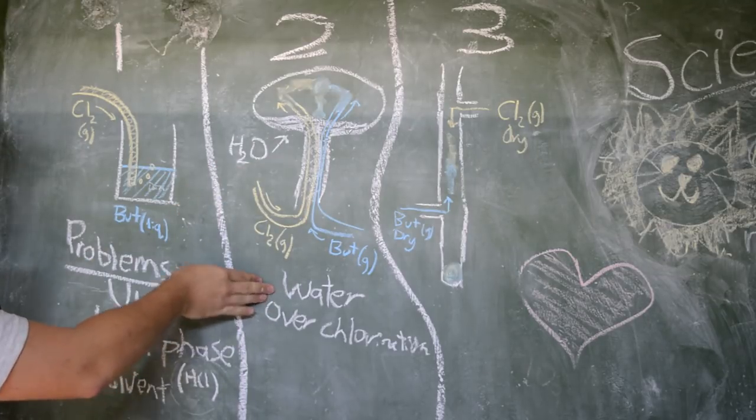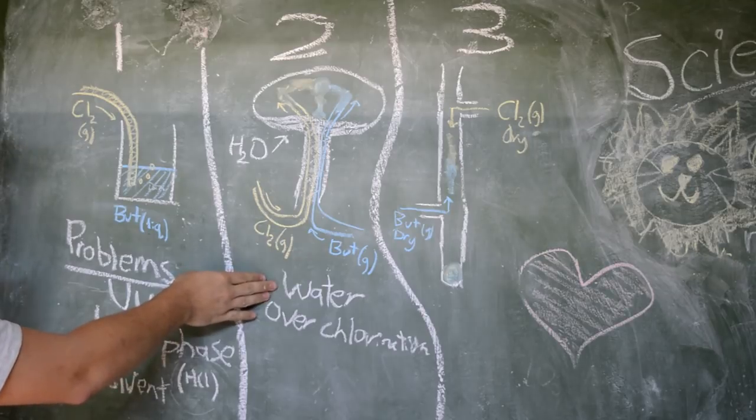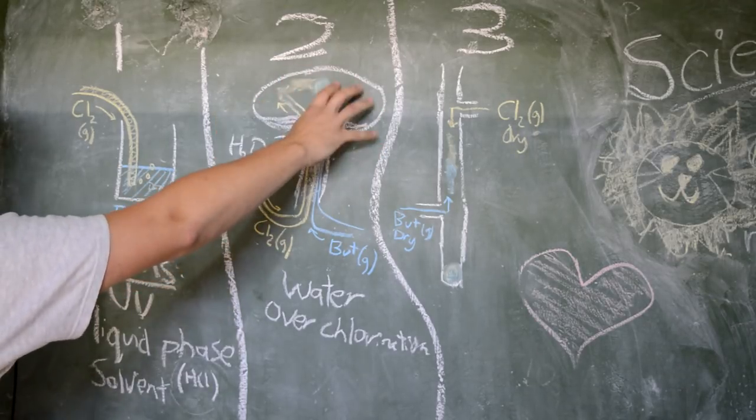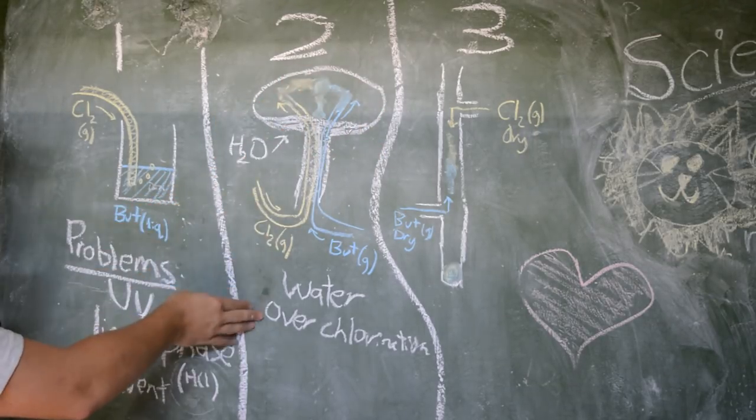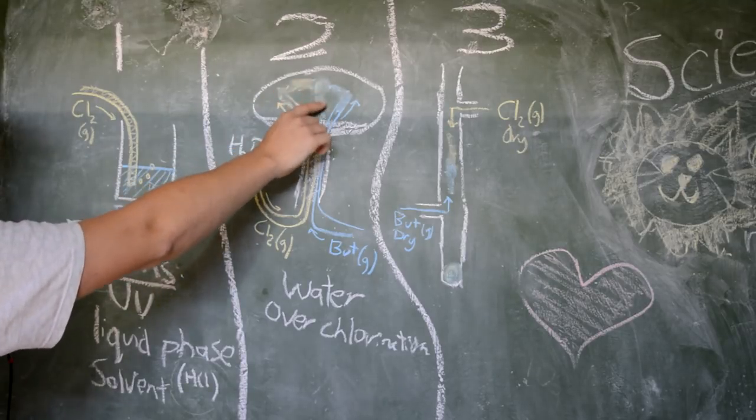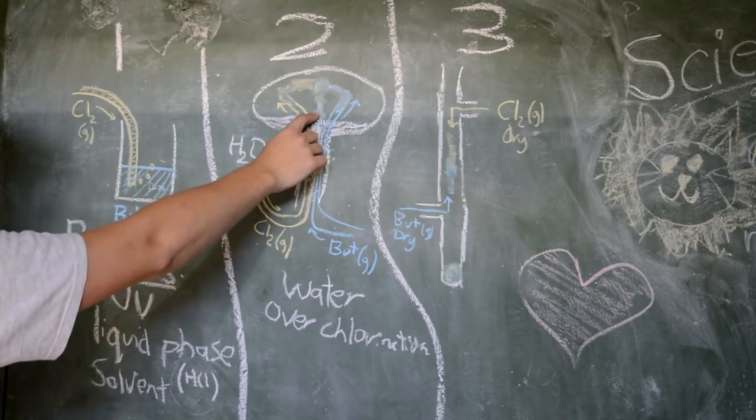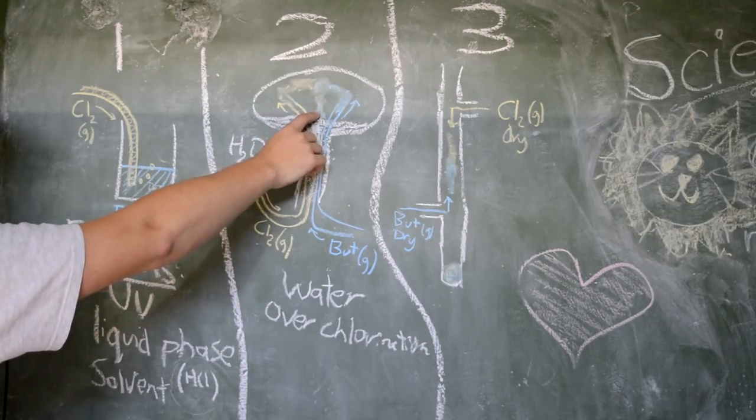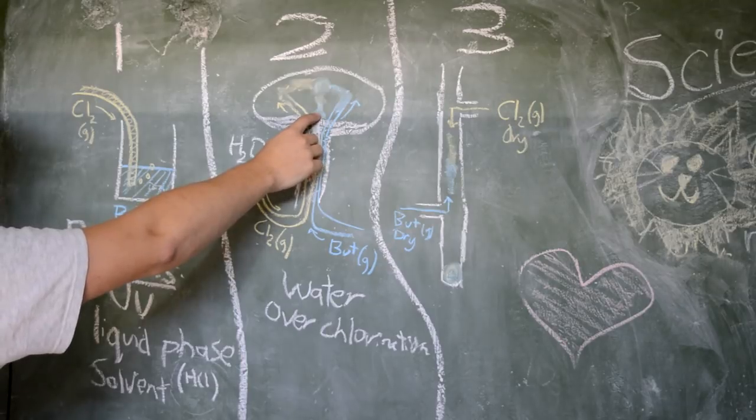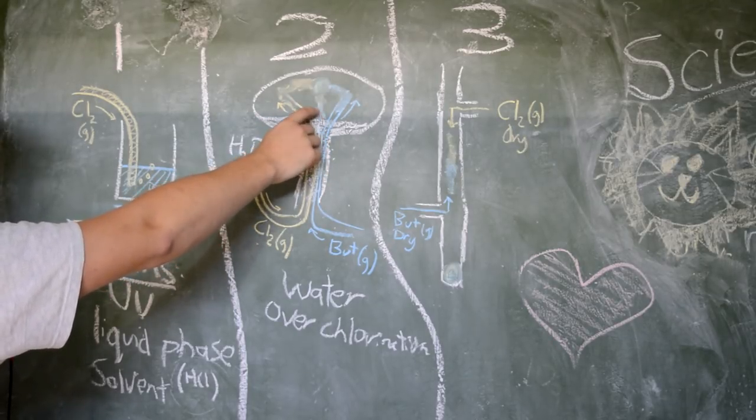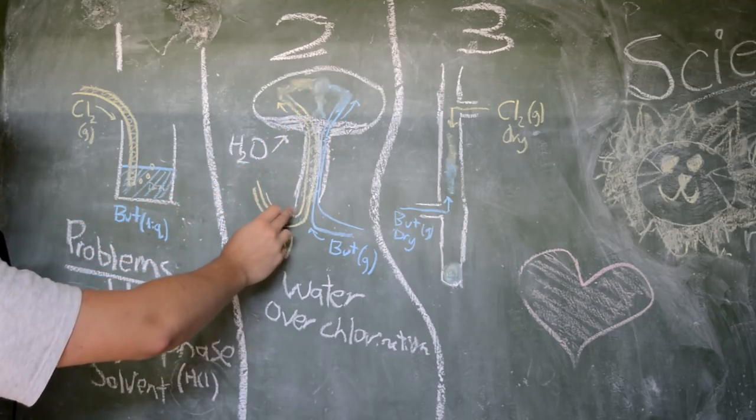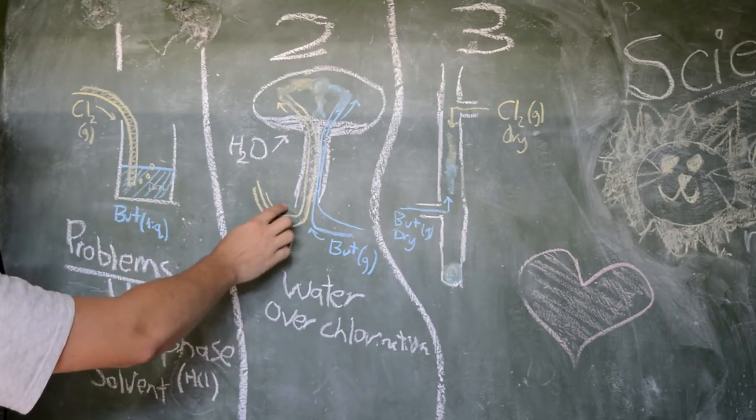The main one, of course, and pretty much everyone sort of thought this was going to be quite an issue was that there was a lot of water in this setup. So this whole gas phase area is just absolutely saturated with water vapor. Overchlorination too, because when our gases mix and form the liquid, it would float on top of the liquid there. And then the only way we could collect it was when it for some reason sunk.